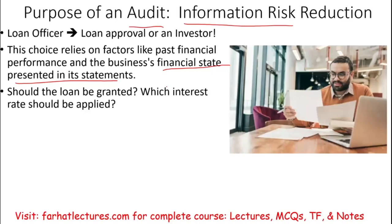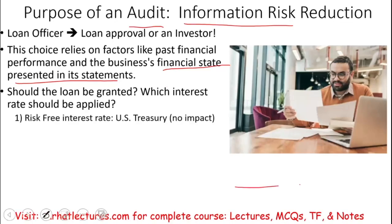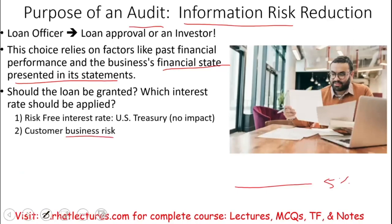When you're determining the interest rate, you would look at the risk-free rate. You would say, if I need to lend the government, I will charge the government 5%. The government is risk-free, so I'm going to start with this. I'm going to add to this interest rate the customer business risk.